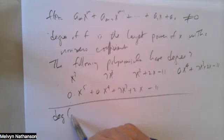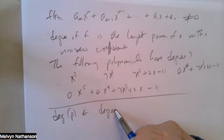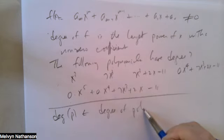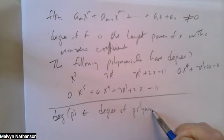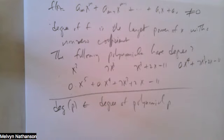We use deg(p) as notation for the degree of the polynomial p. A quadratic polynomial is degree 2, and so forth.